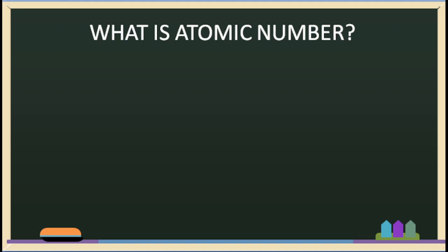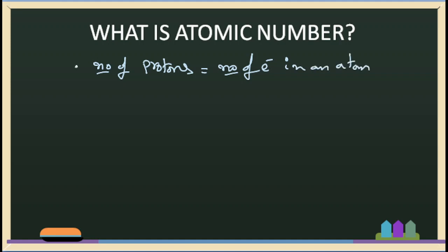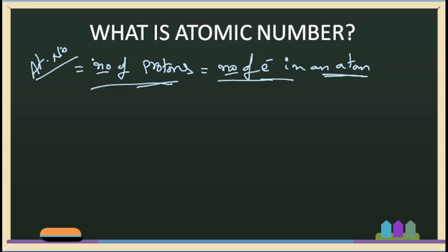What is an atomic number? Atomic number is nothing but the number of protons or number of electrons present in an atom. For example, an atom has one proton and one electron. The atomic number of that particular atom is equal to 1. That element is hydrogen.